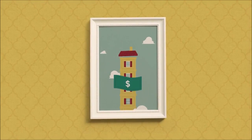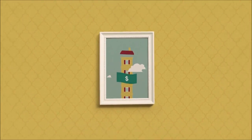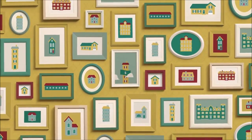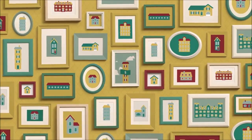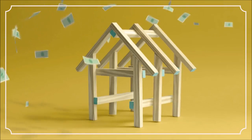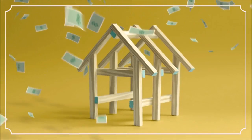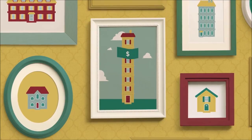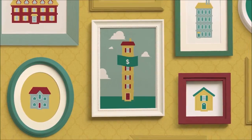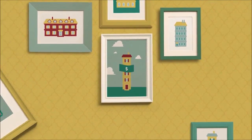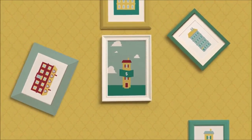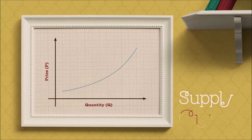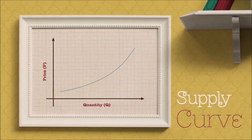Also, when housing prices go up, quantity supplied goes up, because manufacturers can make a bigger profit. And when house prices go down, quantity supplied goes down. This relationship between price and supply is called the supply curve.